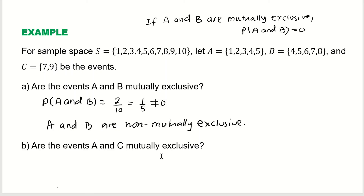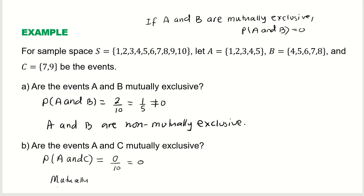Now let's check whether A and C are mutually exclusive. We look for any common elements between A and C. A contains 1, 2, 3, 4, 5, and C contains 7 and 9 — there is nothing common. So the number of common elements is 0 out of 10, which equals 0. Since probability of A and C equals 0, the events are mutually exclusive, meaning they are disjoint.